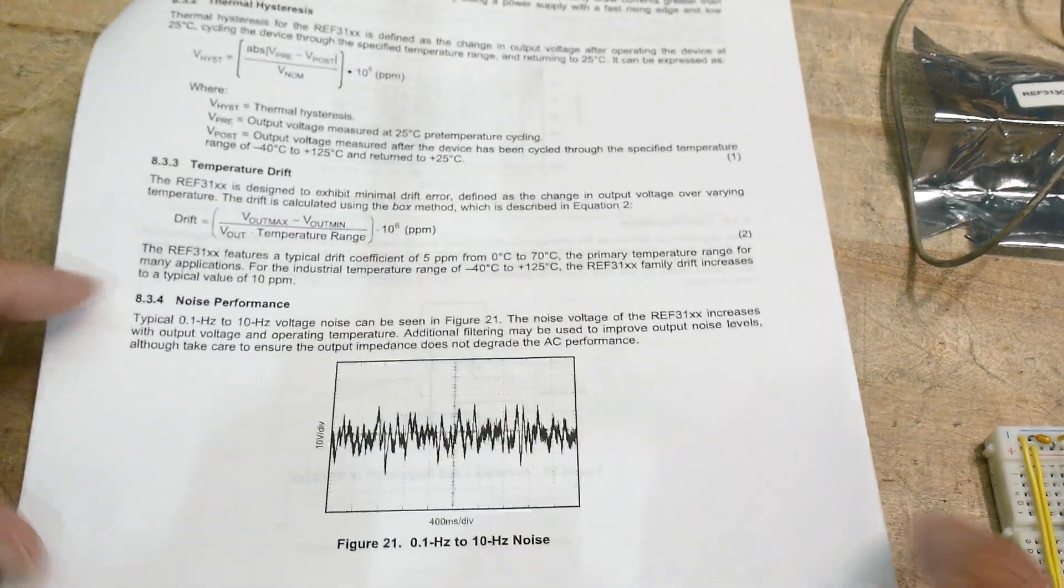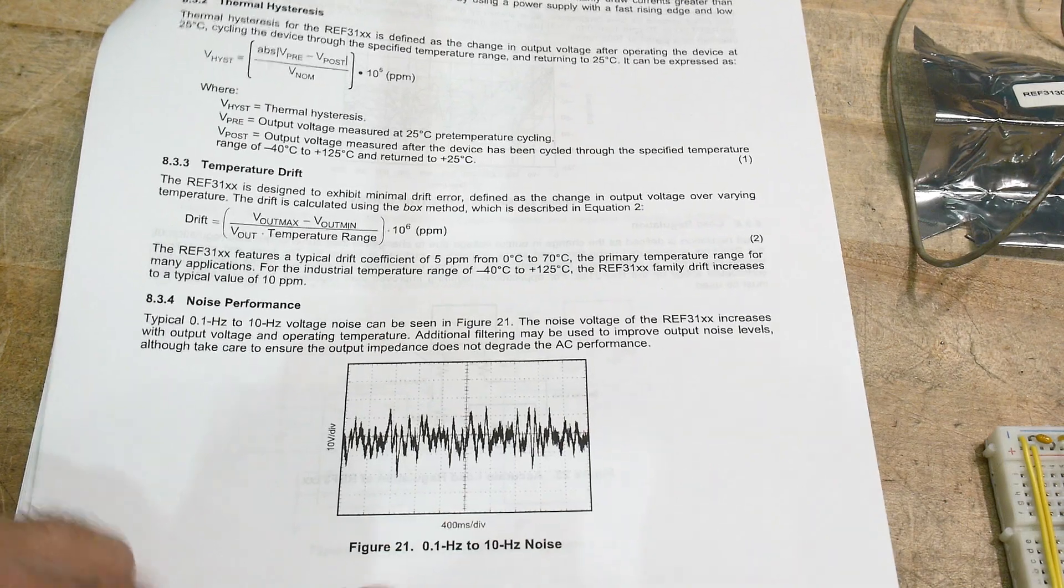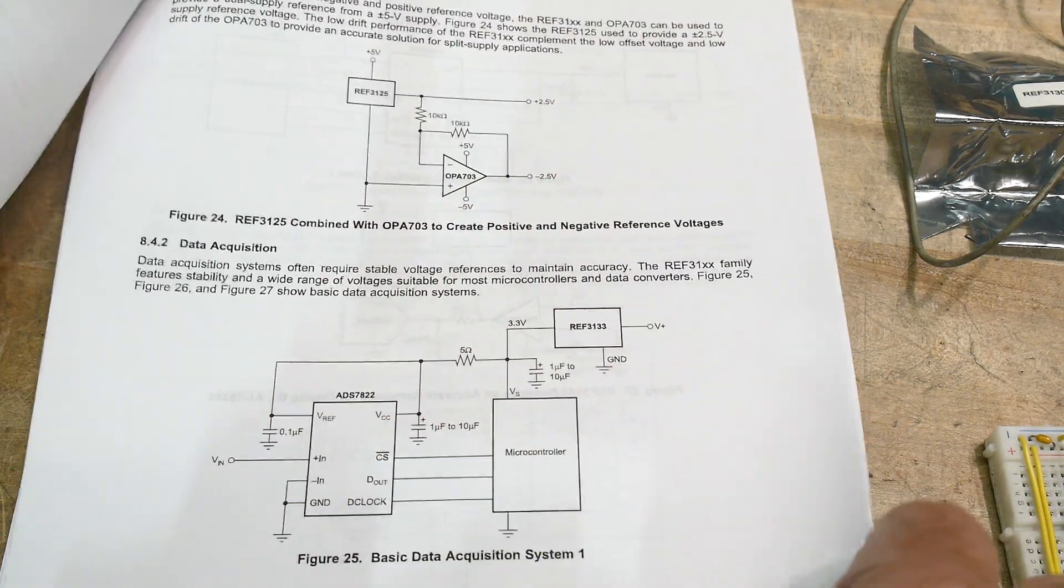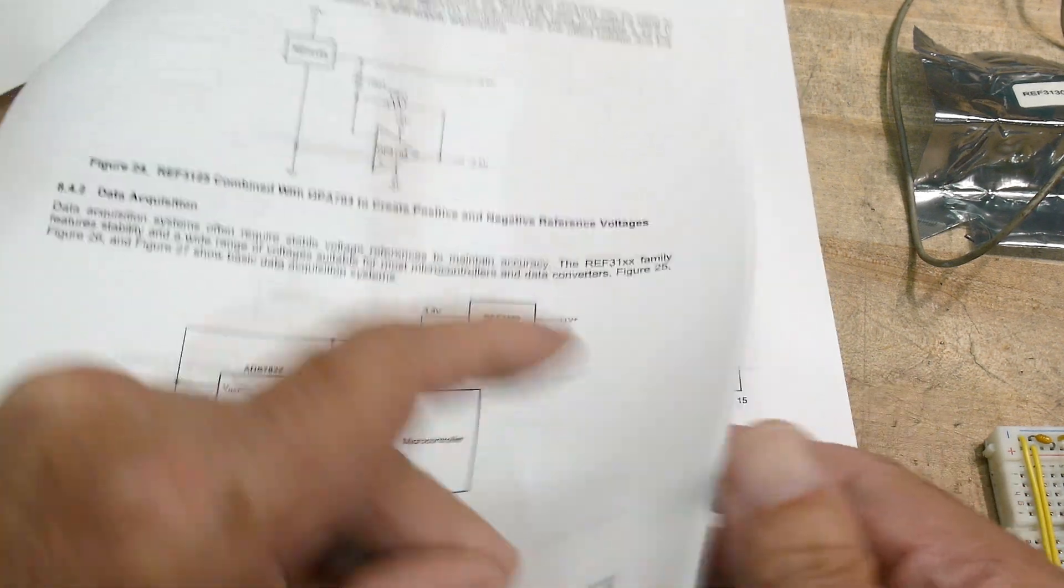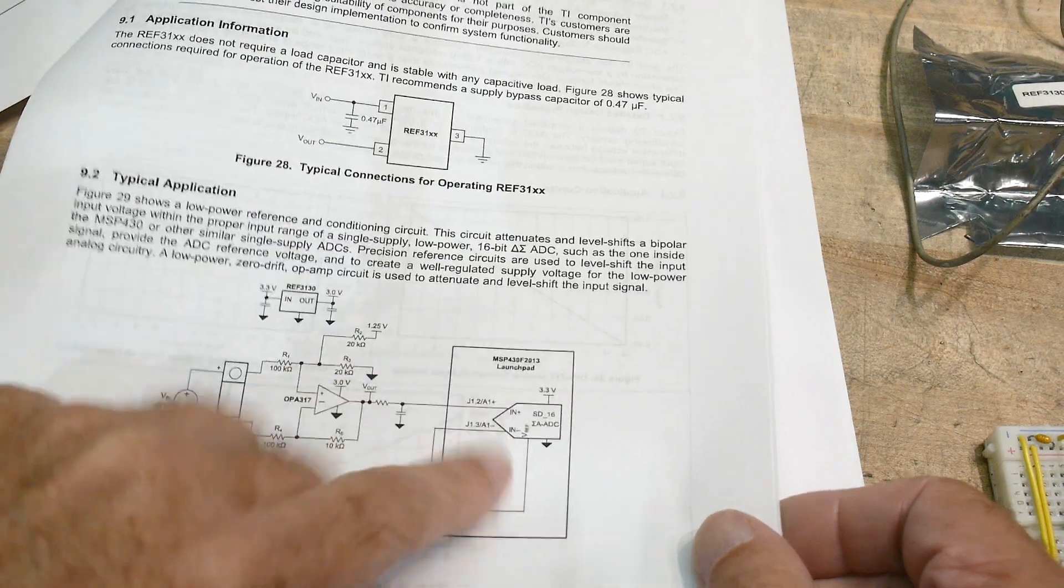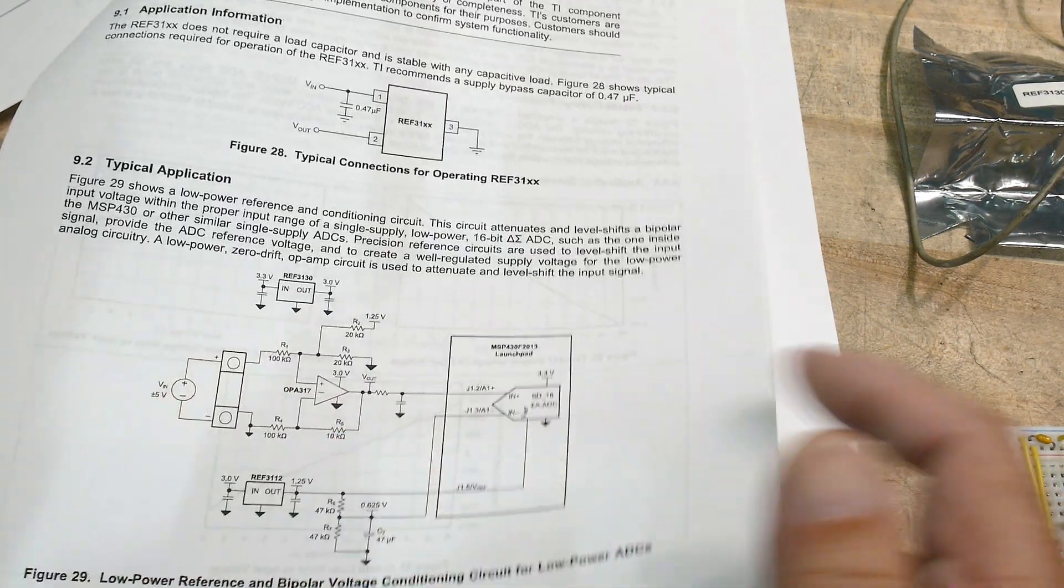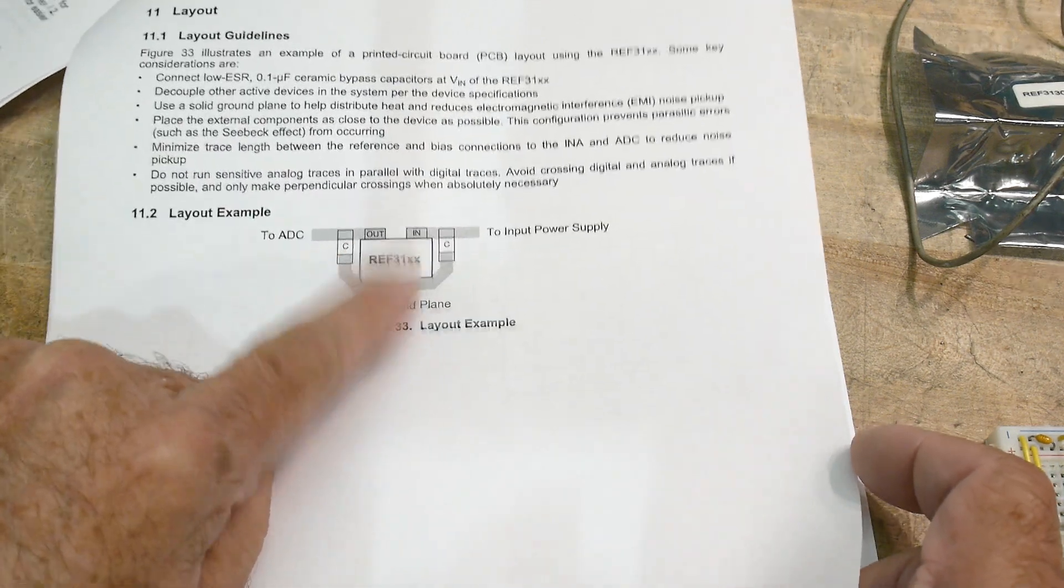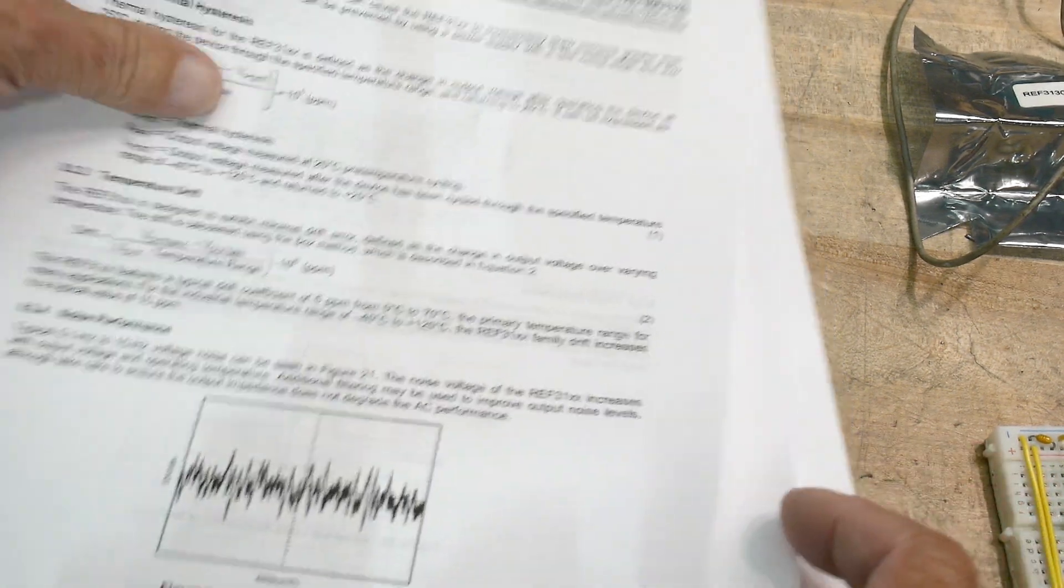What else do we got? Noise. This is a 0.1 to 10 Hertz noise. A bunch of sample circuits of what you might want to do with it. Use it in the ADC, DAC. Tells you laid out like this. Yeah, very cool. Nice datasheet as usual for Texas Instruments.